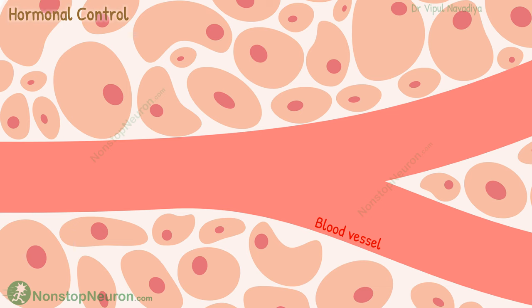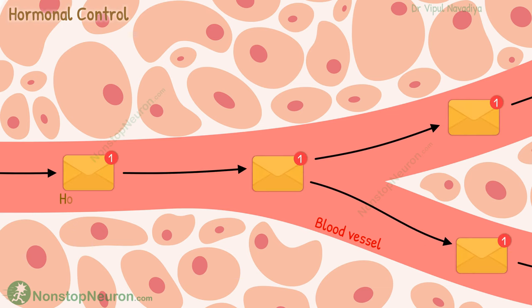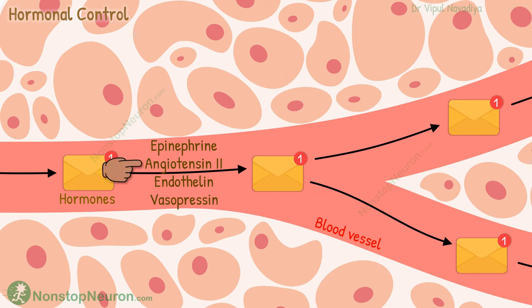Moving on to hormones. Certain circulating hormones in our blood can also influence smooth muscle contractions. For example, epinephrine, angiotensin 2, endothelin, vasopressin, etc. Like angiotensin 2, which causes contraction of arteriolar smooth muscles. So this was about hormonal control.